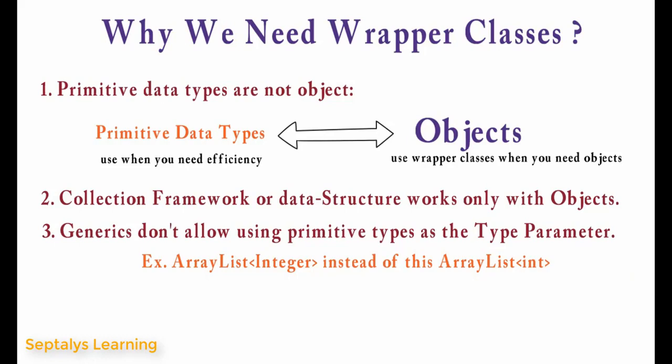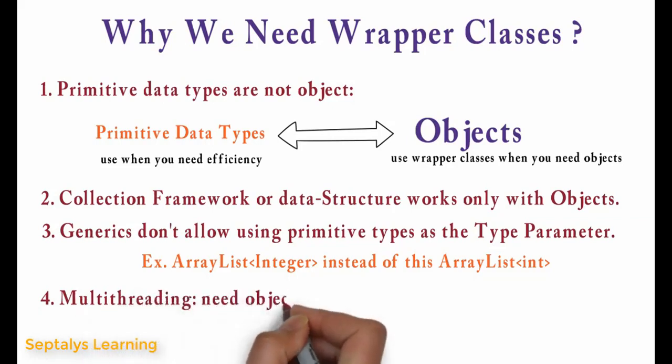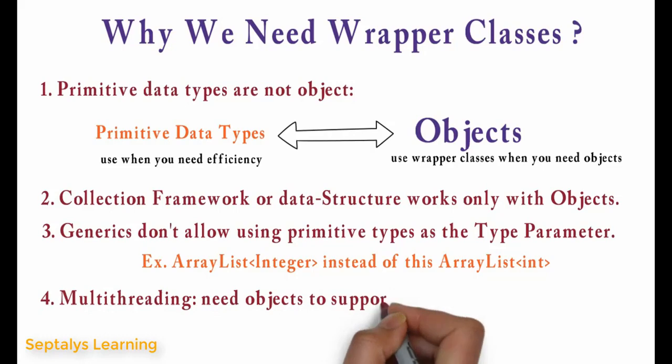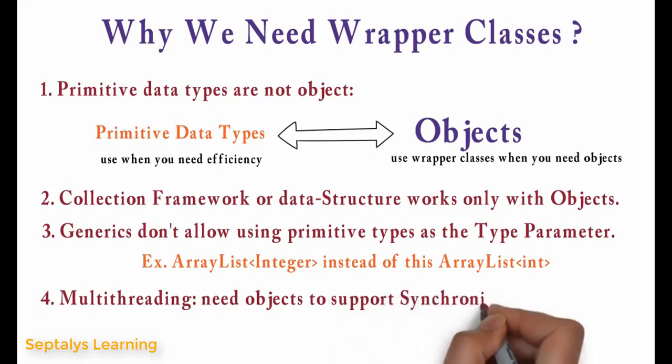Next is multithreading. We need objects to support synchronization. Wrapper class objects allow null values while primitive data types don't allow it.